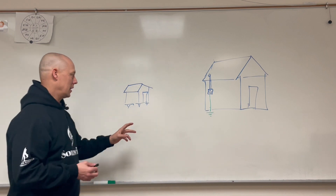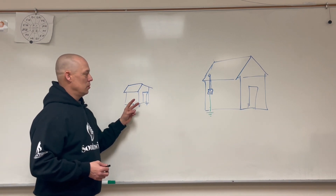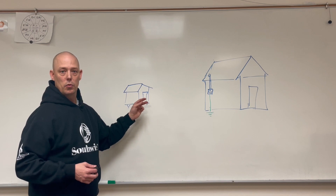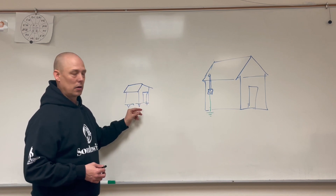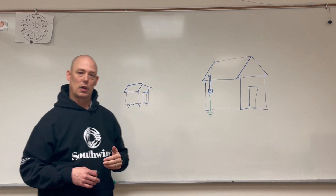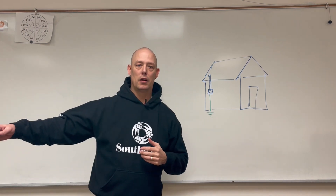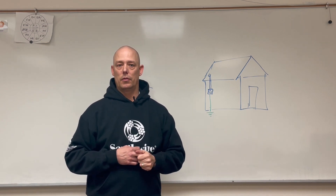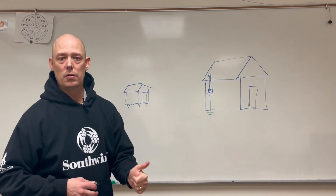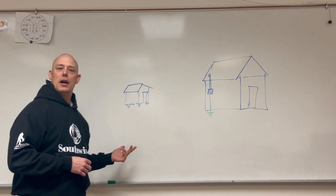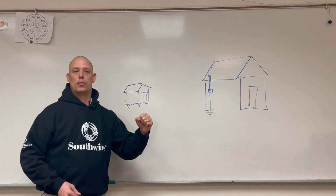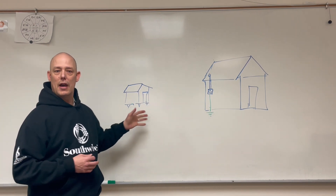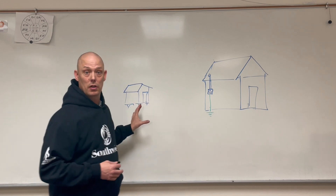What that means is I could take a two-hot conductor with a neutral — two ungrounded and one grounded conductor — and split that up into two separate circuits. I could have my light on one circuit and my receptacle on another. But let's say I want to have a receptacle, a light, and a circuit for a chop saw or something of that nature out here — now I have three circuits.